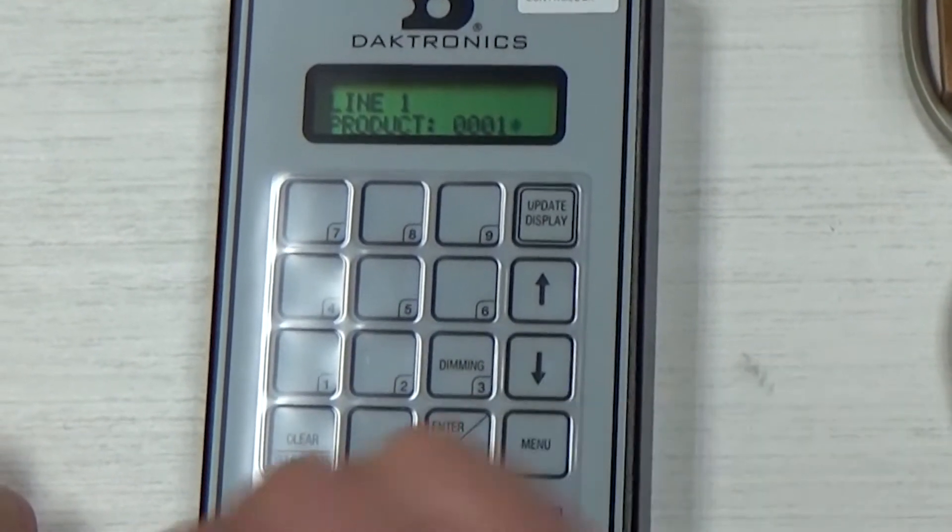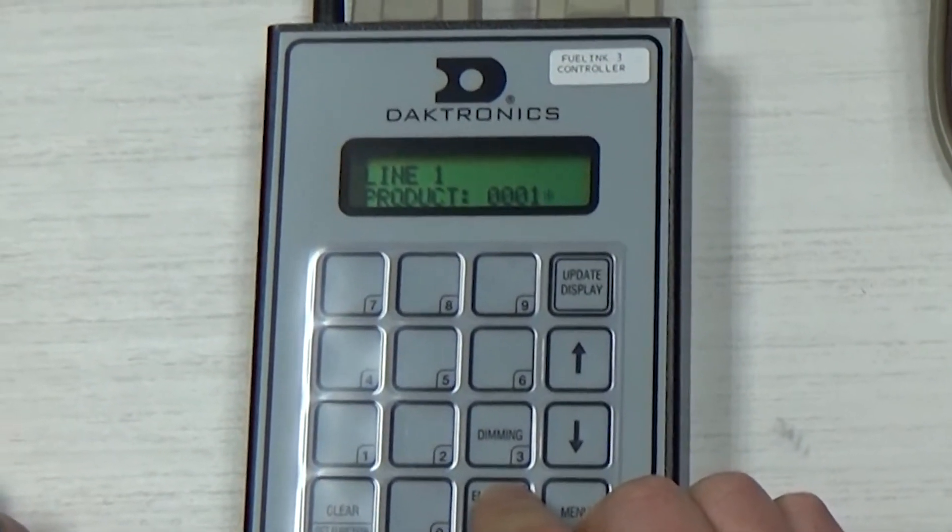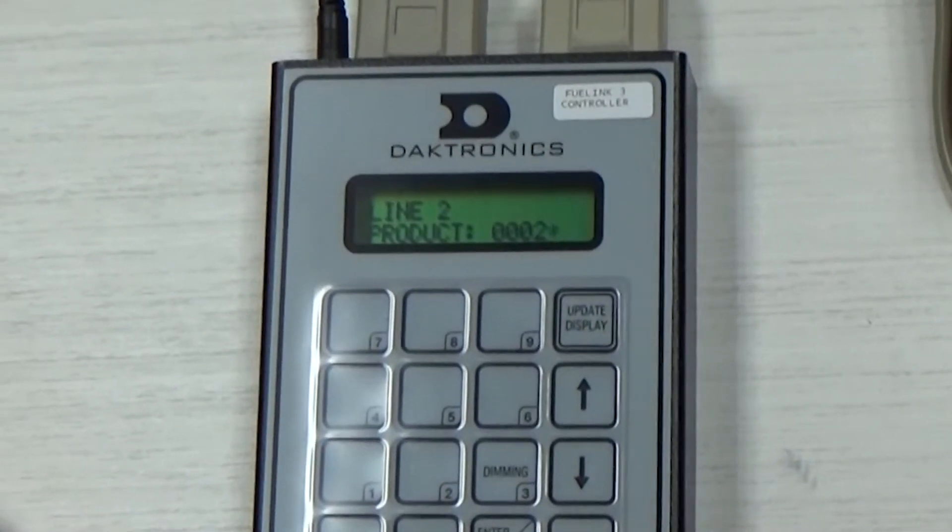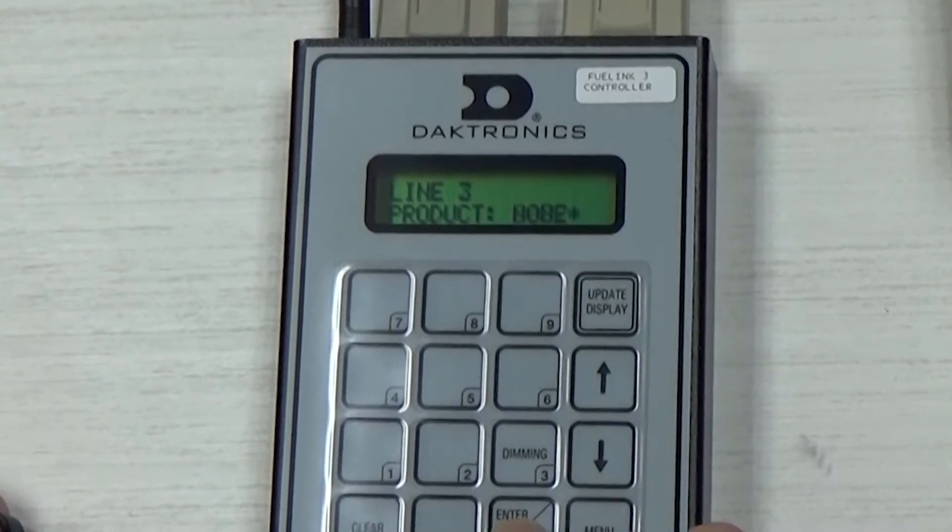After setting the Point of Sale, the DM100 will now be prompting to set each line product to an appropriate value or price category. Once line one product is set, press enter to set line two product and so on.